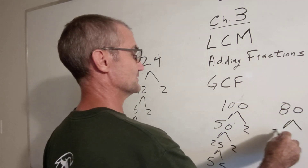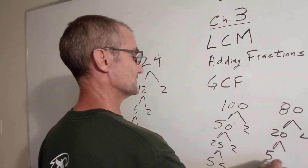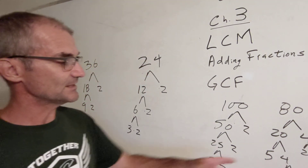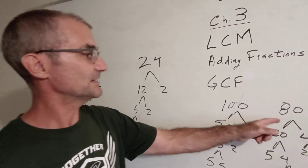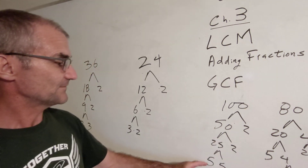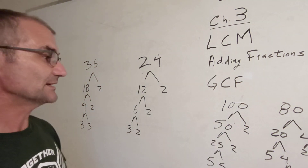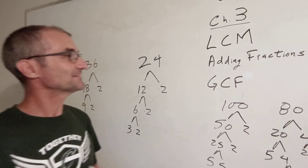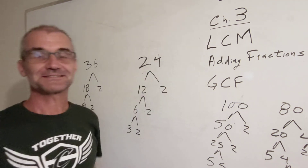For 80, let's say 20 and 4: 20 is a 5 and a 4; a 4 is a 2 and a 2. So the factors of 80 are 5, 2, 2, 2, and 2. Which is the biggest factor that goes into both 80 and 100? I can see a 20 would work for both. 25 is too big. So the greatest common factor between 80 and 100 is 20.